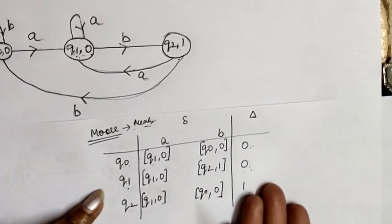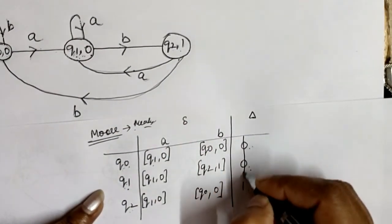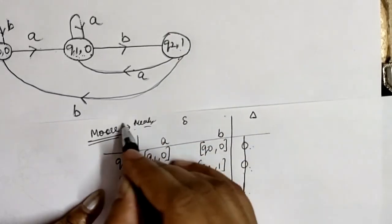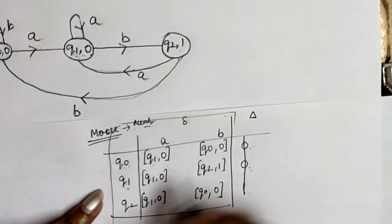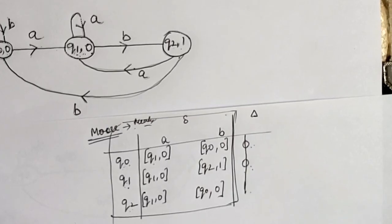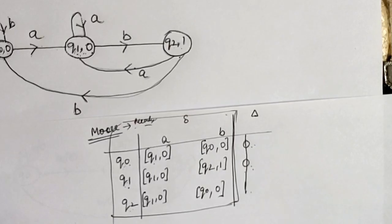After moving all the outputs which were associated with the states — now they are associated with the transitions — we then delete the output column. This remaining table represents the transition table for the Mealy machine. This is how we convert a Moore machine into a Mealy machine. In the next video we will see the procedure for how to convert a Mealy machine into a Moore machine. We can say that Moore and Mealy machines are at the same level and are equivalent to each other.